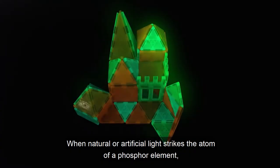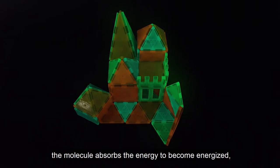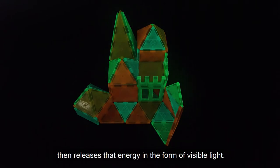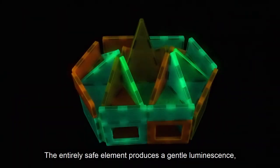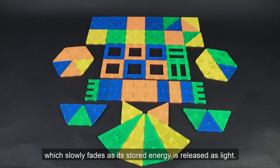When natural or artificial light strikes the atom of a phosphor element, the molecule absorbs the energy to become energized, then releases that energy in the form of visible light. The entirely safe element produces a gentle luminescence which slowly fades as its stored energy is released as light.